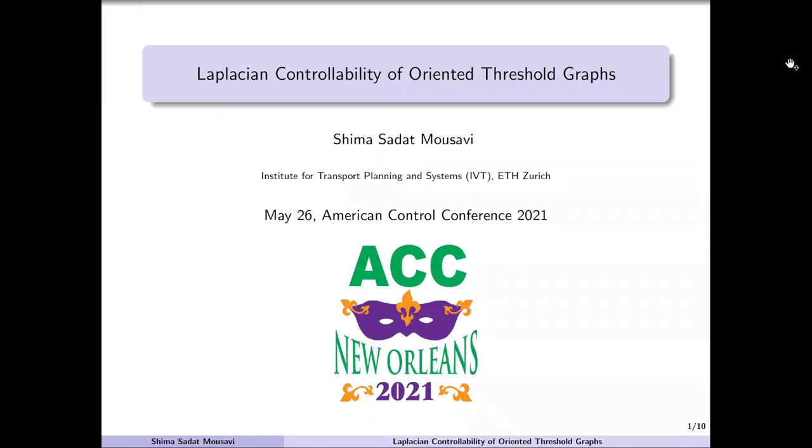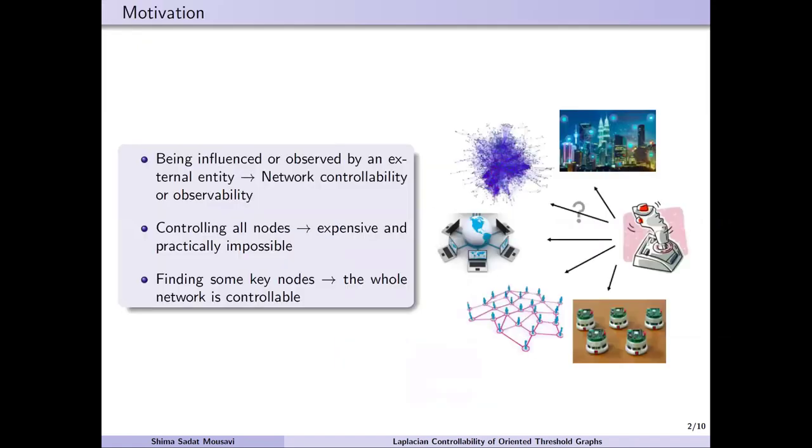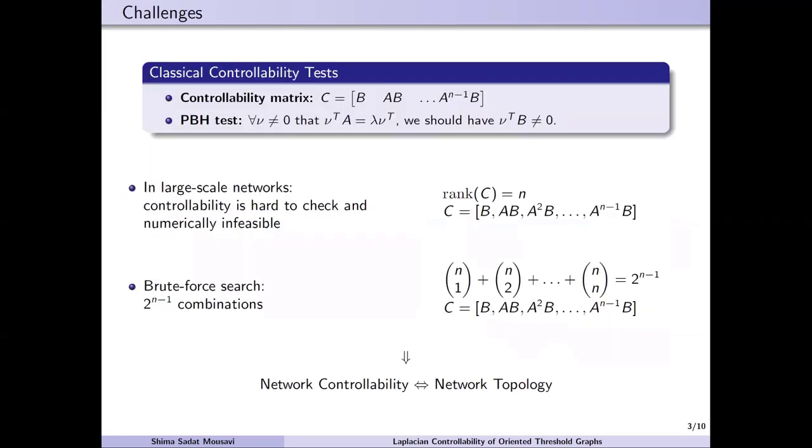Hi, my name is Shima Sadat Musavi, and I'm from ETH Zurich. In this work, we focused on the controllability analysis of Laplacian networks with oriented threshold graphs, or OTGs. Network controllability and observability arise in situations where a network is influenced or observed by an external entity. In a larger scale network, it is practically impossible to control all the nodes, so we aim to find some key nodes which can be directly controlled and render the whole network controllable. There are some classical controllability tests to check the controllability of an LTI system. However, using them results in numerical infeasibilities in larger scale networks.